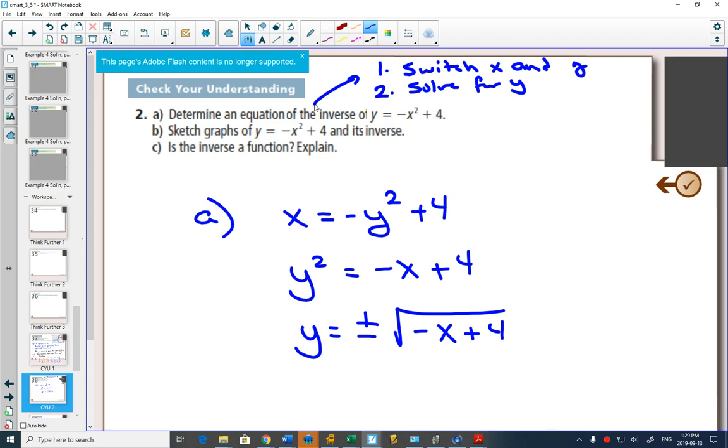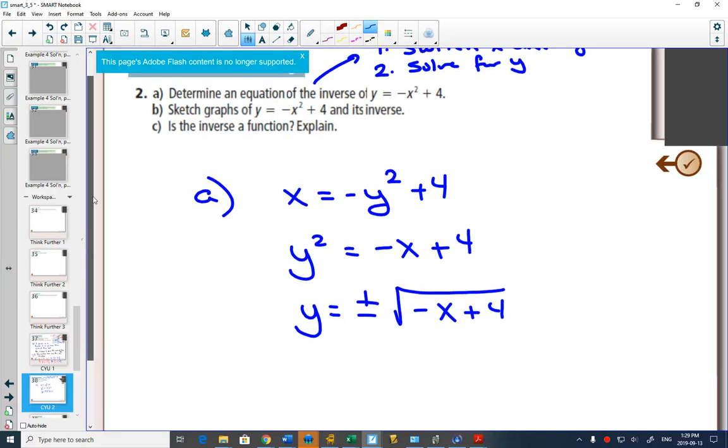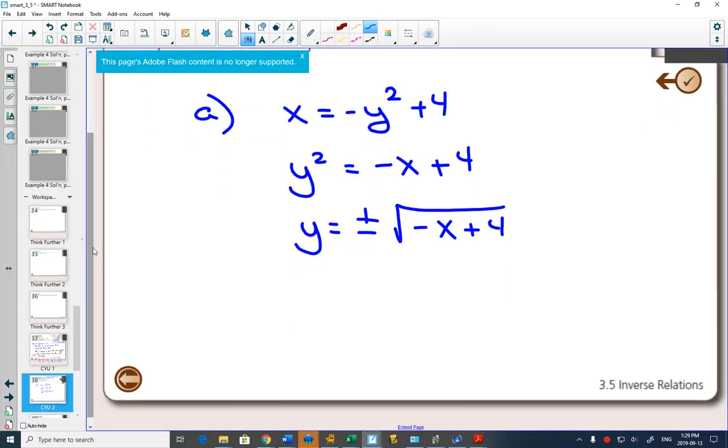Sketch the graphs of y equals negative x squared plus 4 and its inverse. We have two options here. While sketching y equals negative x squared plus 4, that's fairly straightforward. We can use our transformations.